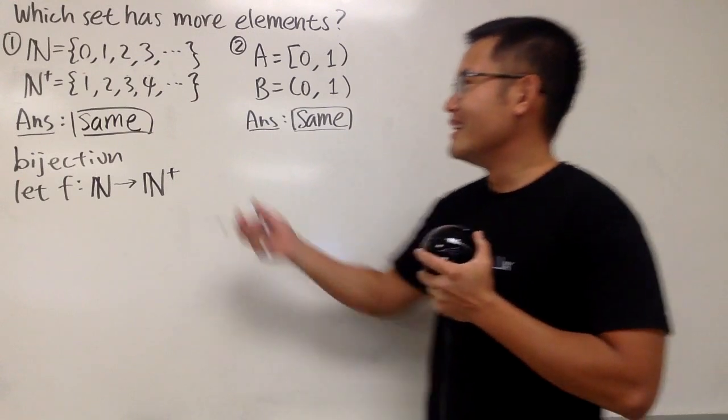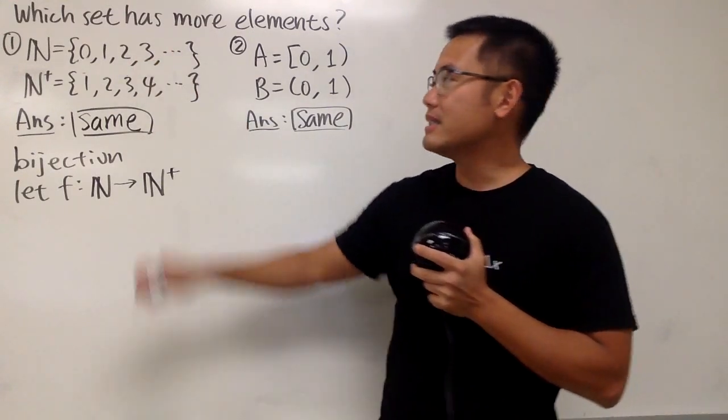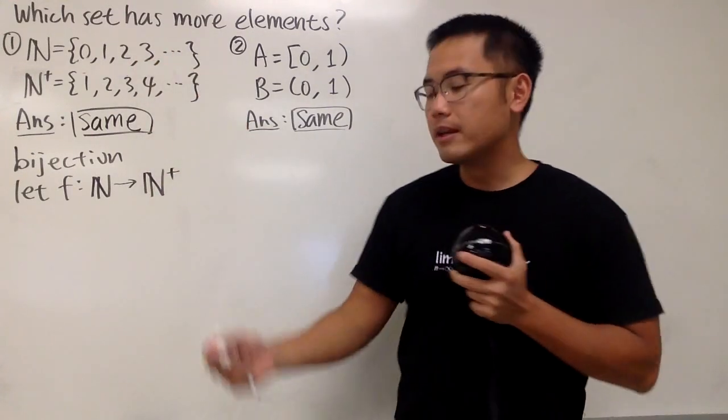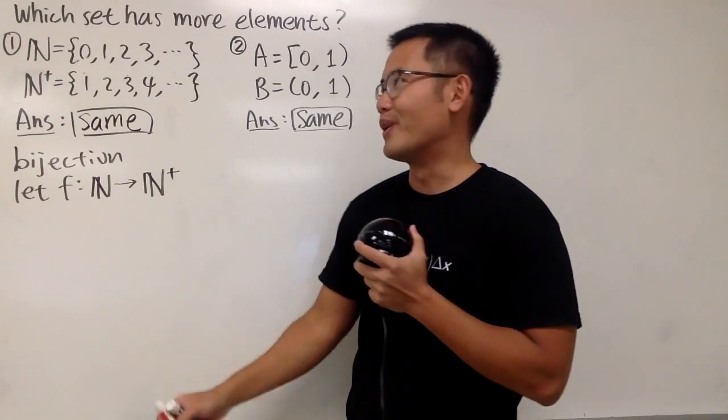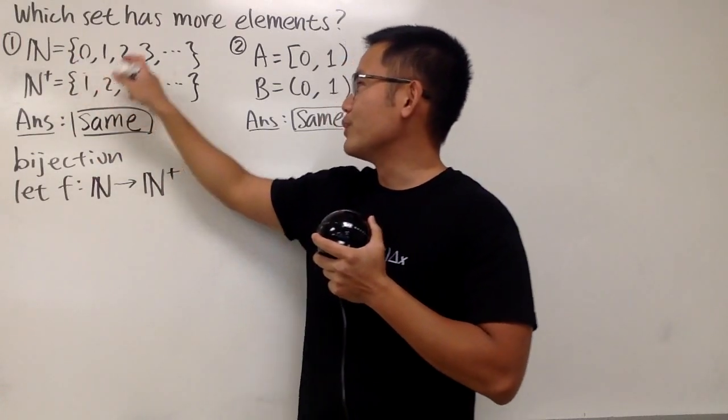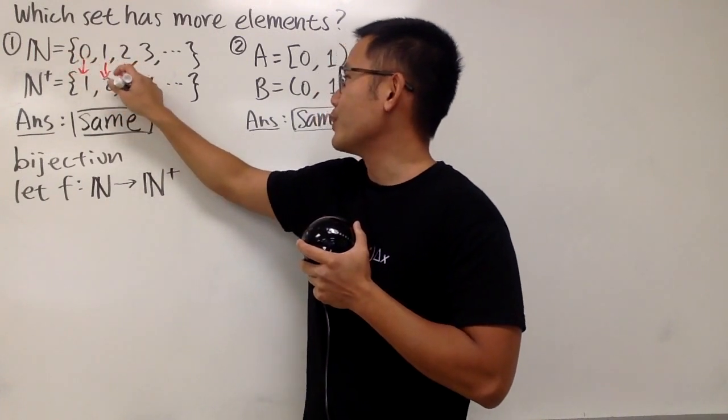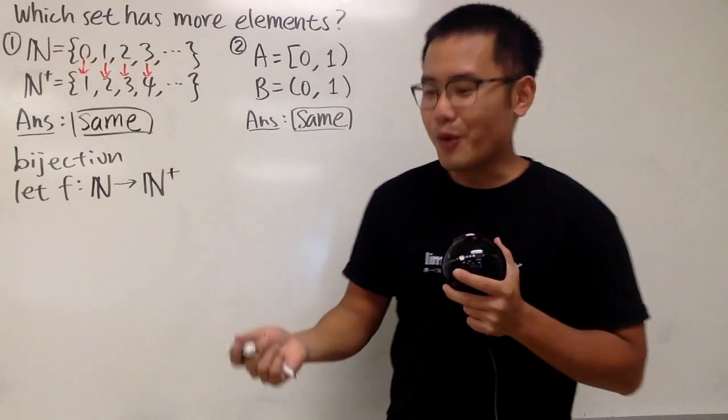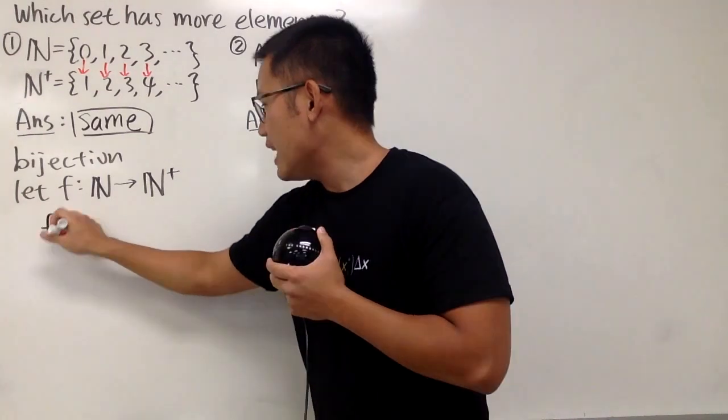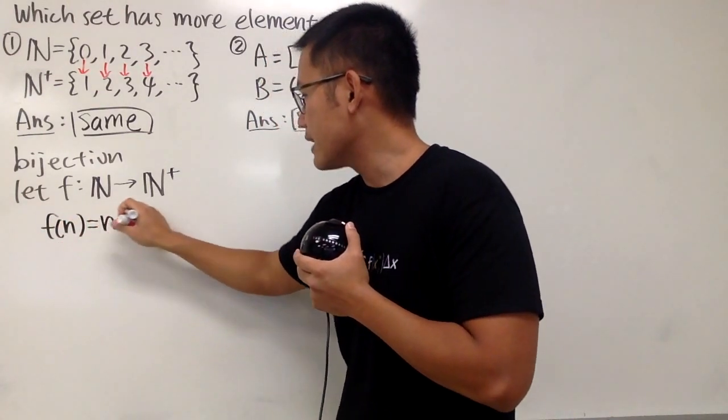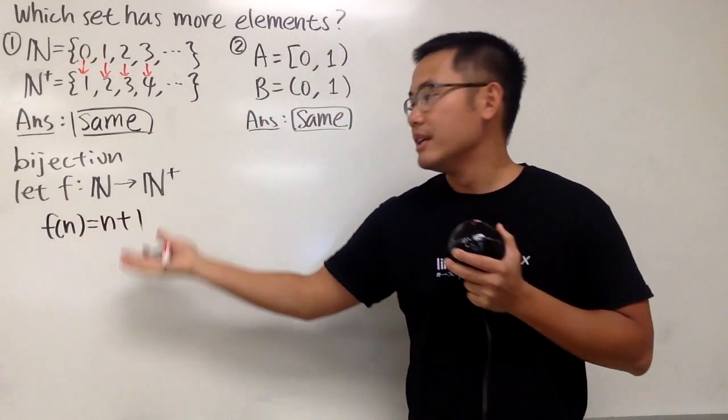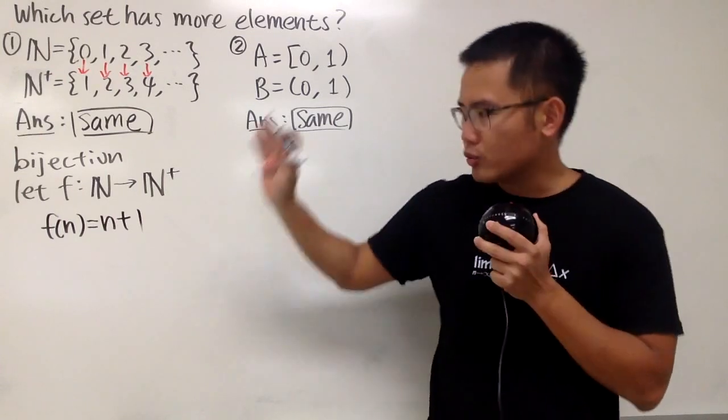Anyway, this right here is not that bad because this and that set, they are countable. So it's pretty straightforward. Can we go from zero to one, one to two, two to three, and so on? Yeah, very straightforward. We can just add one to it. That's all. So the formula is, we can just say that f of n equal to n plus one, and that's it. This is clearly a bijection, so done deal.